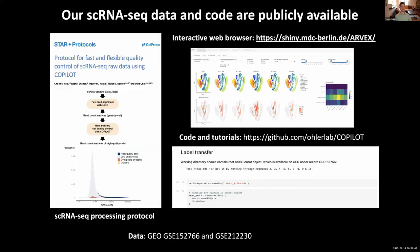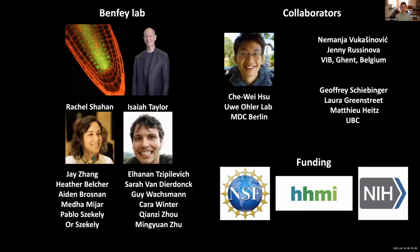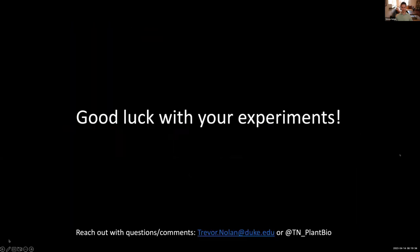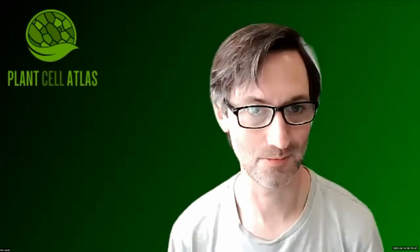I hope I've gotten you excited about single cell and given you a few things to think about. Our single cell sequencing data and code are publicly available — you can look at our GEO accessions, our STAR protocols for single cell processing, and our interactive web browser called ARVEX where you can access and interactively explore all of our data. You can also check out our code and tutorials for the analysis side. Thank you to everyone involved in this project, especially Philip, Rachel, Isaiah, and Choway, and our funders. Good luck with your experiments, and please reach out if you have questions. Thank you very much, Trevor — that was an excellent introduction.